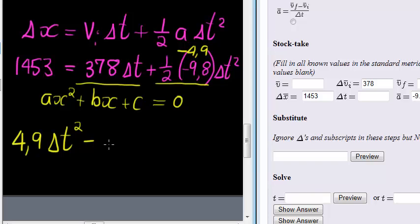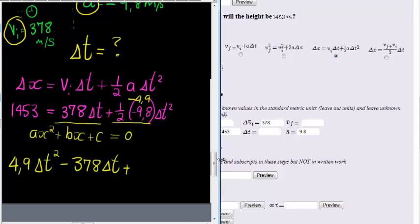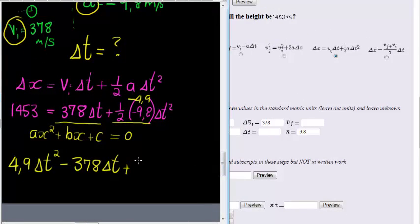because this one taken to the other side will become negative, negative 378 delta t plus, I'm going to have to make this a bit bigger, negative 4.9 delta t plus 1453 is equal to zero.